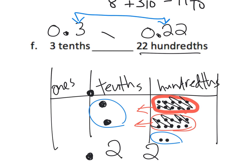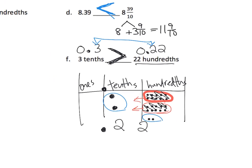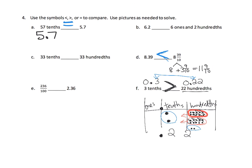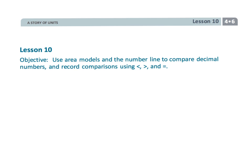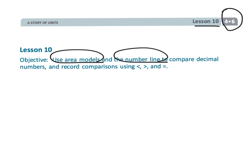That means the symbol is the greater than symbol. And that wraps up fourth grade module 6 lesson 10 — using the area model and the number line to compare decimals.